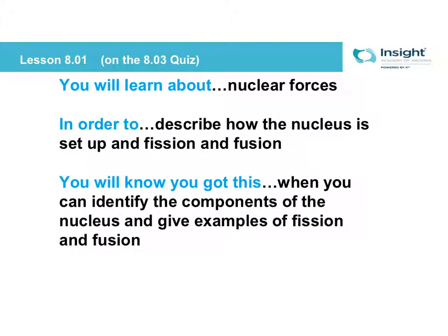We're going to start our last unit of chemistry. Since you guys are in chemistry B, it's the last unit of chemistry ever, at least in high school. This last unit is all about nuclear chemistry. If you remember way back in chemistry A, unit one, we talked about how atoms are considered pure substances because they can't be broken down further. That wasn't entirely true. They can be broken down further, but not through a standard chemical reaction — only through nuclear reaction.